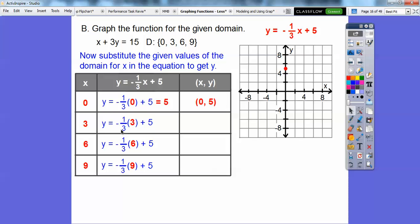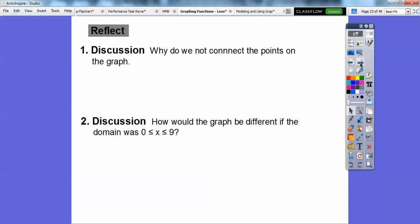These are going to cancel to negative 1. Negative 1 plus 5 is 4, so we get (3, 4). Then 3 goes into 6 two times, so it's negative 2. Negative 2 plus 5 is 3, giving us the ordered pair (6, 3). Finally, we get (9, 2). There's our graph right there.